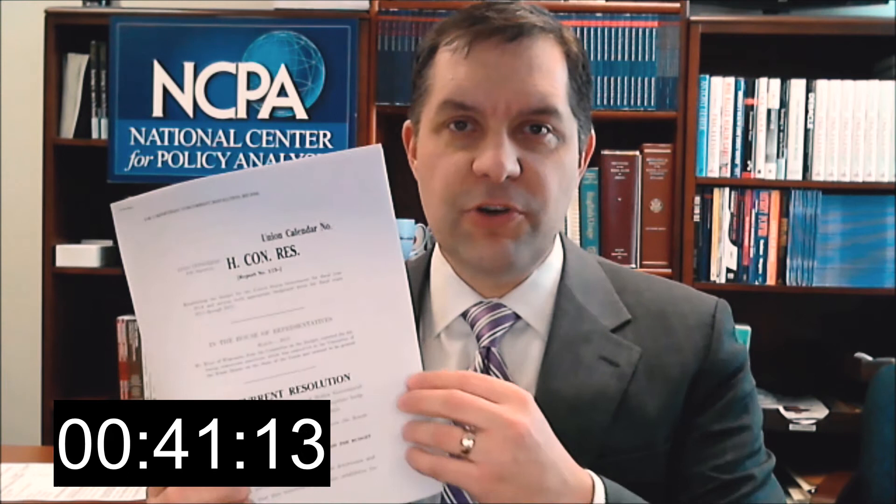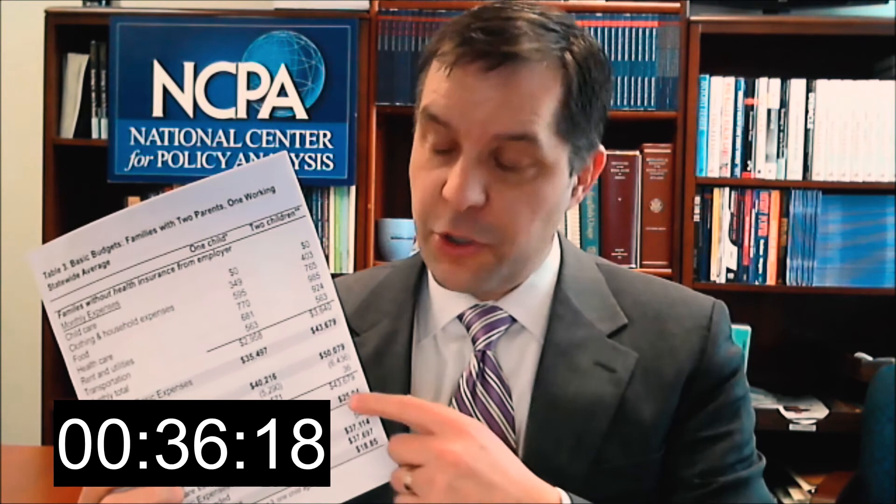Beginning in March, the House and Senate Budget Committees work on Congressional budget resolutions. Unlike the president's budget proposal, Congressional budget resolutions are usually just a few pages long. Like a family budget outlines how much you're going to spend on your mortgage, food, and transportation, the Congressional budget resolution outlines how much Congress will spend in broad categories like defense, health, and transportation.